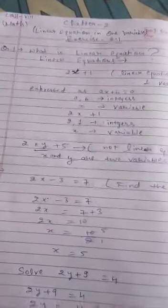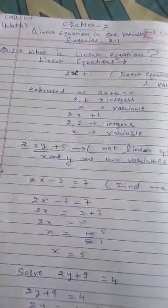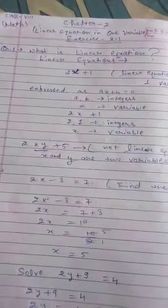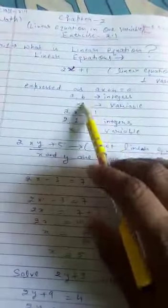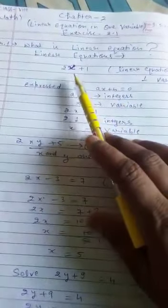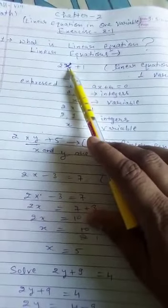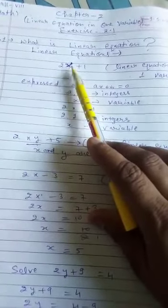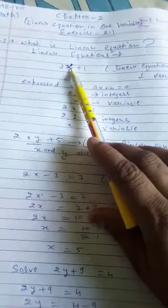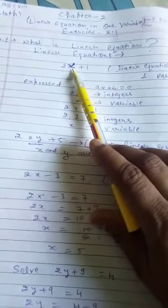You can see here a and b, 2 and 1 are the integers and x is variable. Variable means which value is changeable. We can put the value of x1 also, in place of x2 also, means x value is changeable. That is variable.